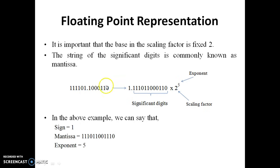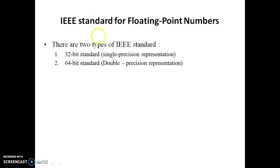For floating point representation, first convert the number into binary, then into normalized form, and then convert into single precision and double precision numbers. There are two IEEE standards available for floating point numbers. The first is the 32-bit standard, also called single precision representation. The second is the 64-bit standard, called double precision representation.